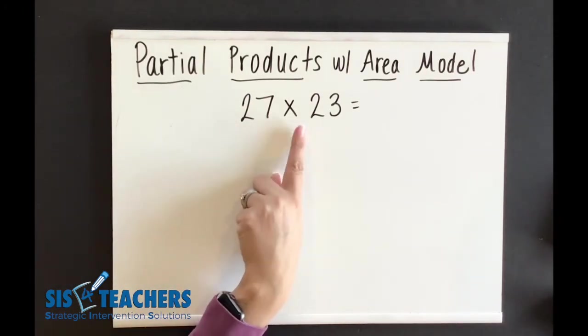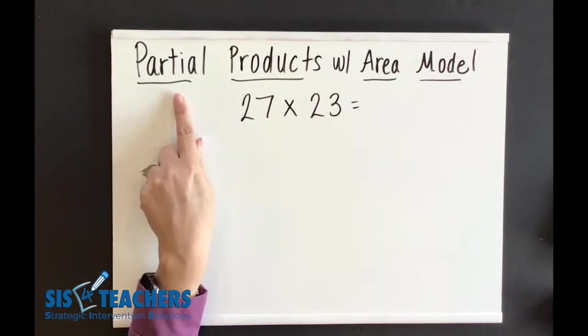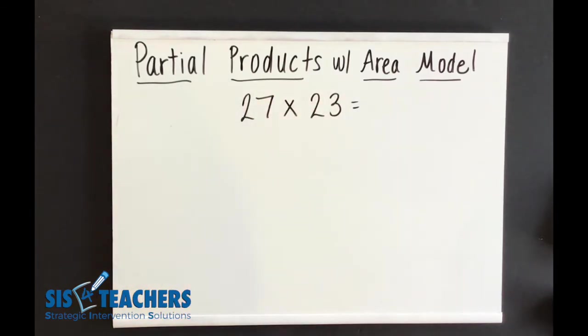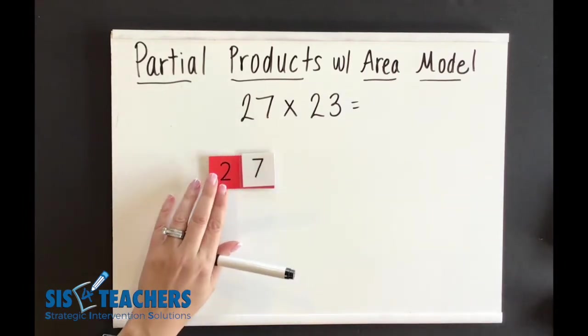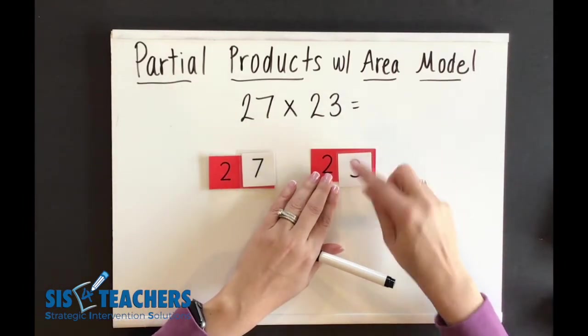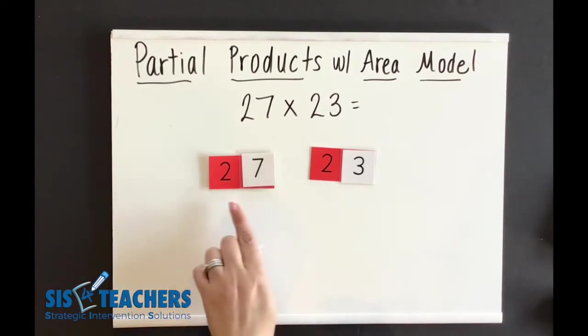Our problem is 27 times 23. We're going to use something called partial products, but we're going to put it into an area model to help us understand what we're doing in multiplication. When we look at the number 27 and then we have the number 23, we're going to really use the value of the numbers to think about how to multiply.